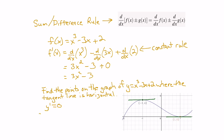So we set 3x squared minus 3 equal to 0 and solve using algebra. Adding 3 to both sides gives 3x squared equals 3. Dividing both sides by 3 gives x squared equals 1. Taking the square root of both sides gives x equals plus or minus 1. So the tangent line is horizontal when x equals negative 1 and when x equals 1.